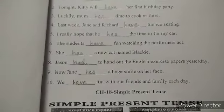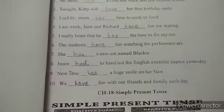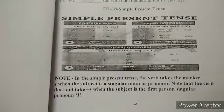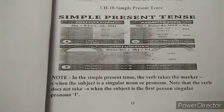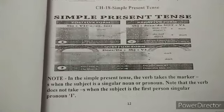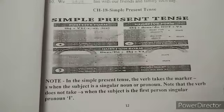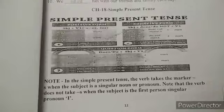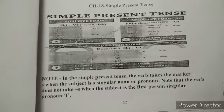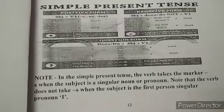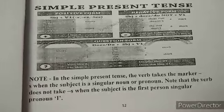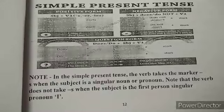Hey little learners, we have completed chapter number 17 as well! Please come to chapter number 18: Simple Present Tense. What is the meaning of simple present tense? The action which is happening in the present time is known as present tense, and simple present tense is one of the forms of present tense. In the simple present tense, the verb takes the marker 'S' when the subject is a singular noun or pronoun.